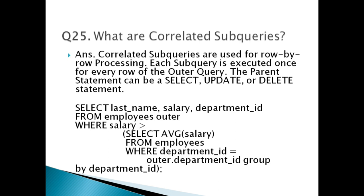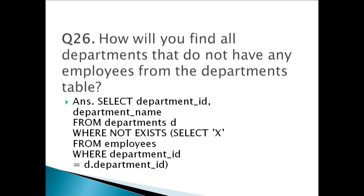I have given an example of a correlated subquery — a subquery has been used here. The query will find all the employees who earn more than the average salary in their department. Question twenty-six: How will you find all departments that do not have any employees from the departments table? I have written a query — please go through it.